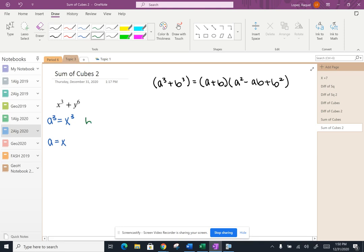Now let's figure out what b cubed is. The thing that's in place of b cubed is y to the sixth. And we've seen this in a couple problems already. When I take the cube root of y to the sixth, that's going to give me y squared.